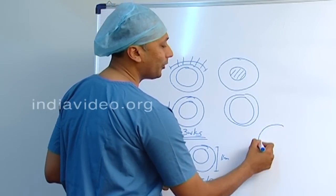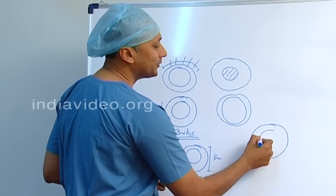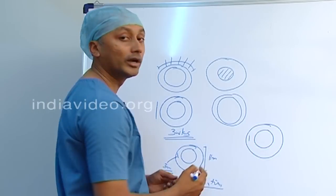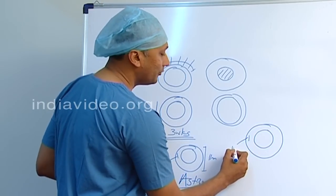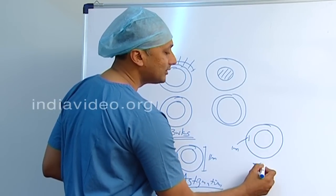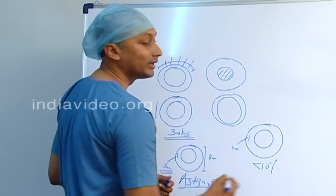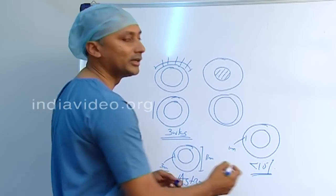To overcome this problem, micro cataract surgery was invented, where the incision was reduced to 1 millimeter. In 1 millimeter incision, it is less than 10 percent of the total size of the eye. Such an eye does not have astigmatism.